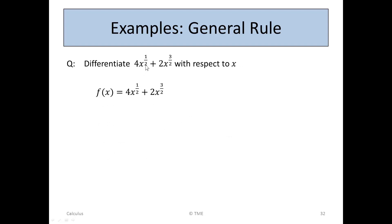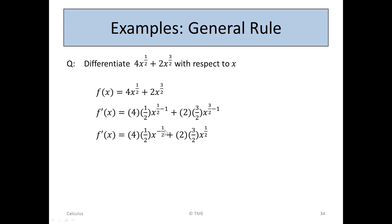Now here's one with fractional powers. Differentiate 4x to the half plus 2x to the 3 over 2, with respect to x. Taking the derivative: 4 is the coefficient, then we take down the half — half x to the half minus 1. Then 2 is the multiplier, and taking down the 3 over 2 — x to the 3 over 2 minus 1. So 4 times a half is 2, half minus 1 is minus a half; and 2 times 3 over 2 is 3, and 3 over 2 minus 1 is a half. Therefore f'(x) is 2x to the minus half plus 3x to the half, or equivalently 2x to the minus 0.5 plus 3x to the 0.5.